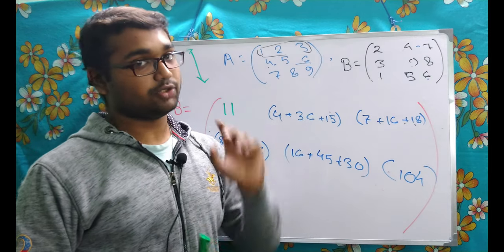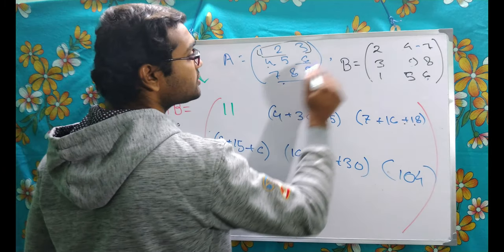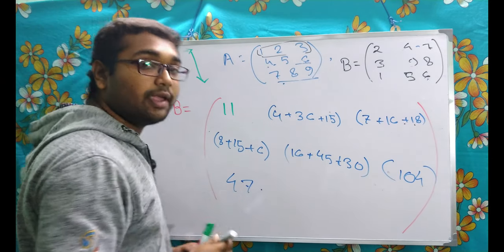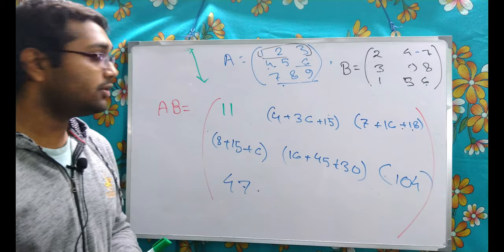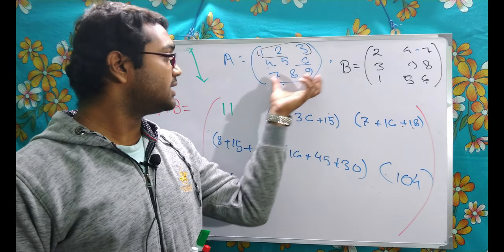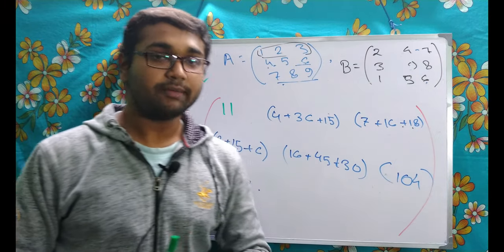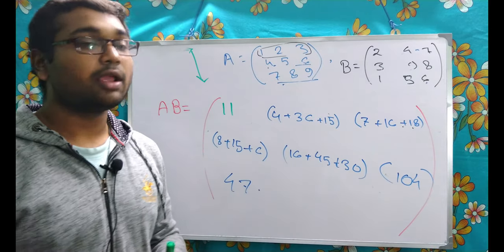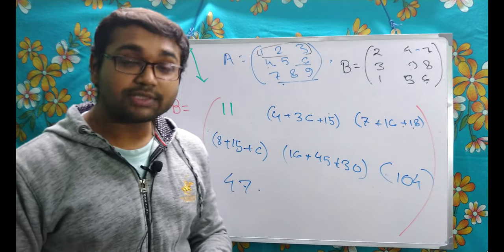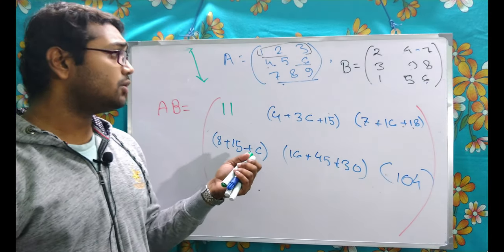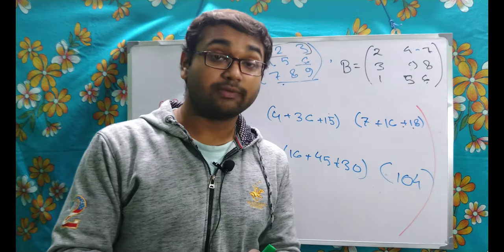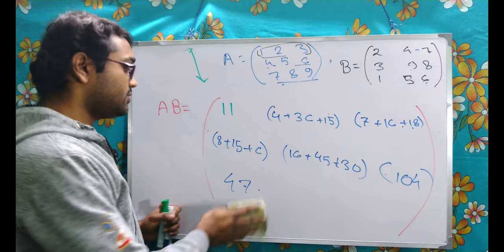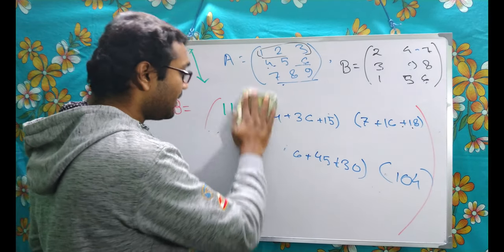We move to the third row: 7, 8, 9. For the first entry: 7×2 = 14, 8×3 = 24, so 38, plus 9×1 = 9, giving 47. We still need to perform the remaining multiplications for the other columns of the third row, then multiplication will be completed. This is the full process of matrix multiplication. It becomes messier with a 4×4 matrix and easier with a 2×2. In class eleven or twelve, you likely won't encounter anything larger than a 3×3 matrix.